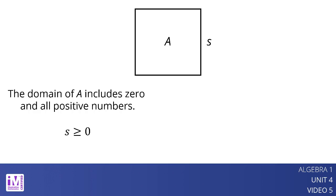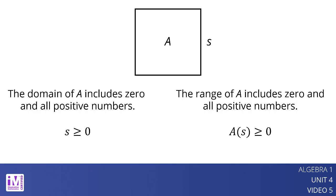The output of function A is the area of a square in square centimeters, which cannot be negative, but can be 0 or greater, not limited to whole numbers. The range of A includes 0 and all positive numbers, or A of s is greater than or equal to 0.